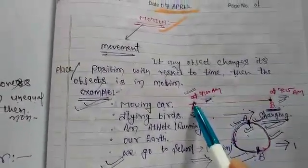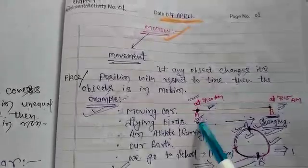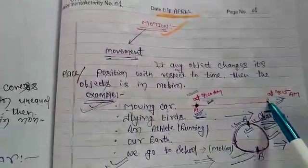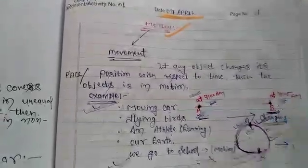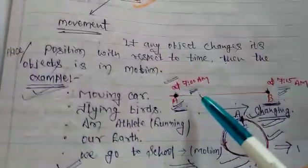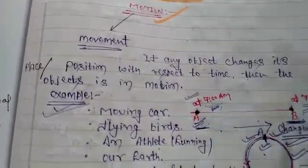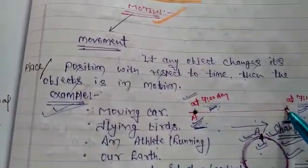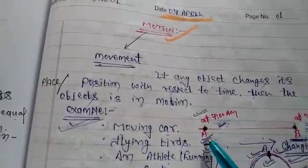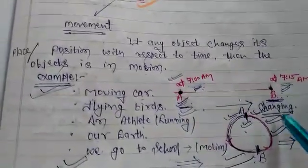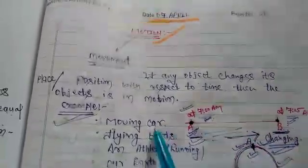Suppose a car is initially at position A and after 15 minutes the position of the car is at B. At 7 a.m. the car starts from A, and after 15 minutes at 7:15 a.m. the car is at B. We observe that the position of the car is changing — initially at A, after 15 minutes at B. Whenever any object changes its position, it is in motion. Here the car is changing its position, so the car is in motion.